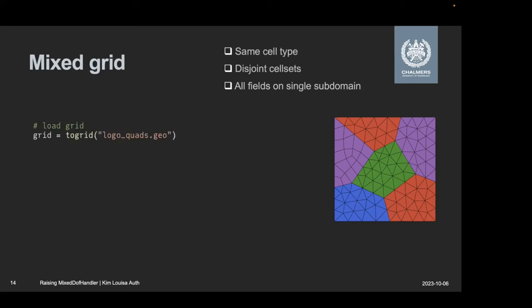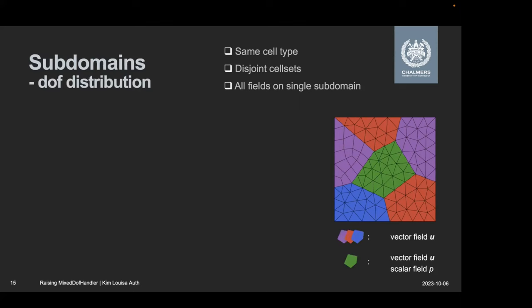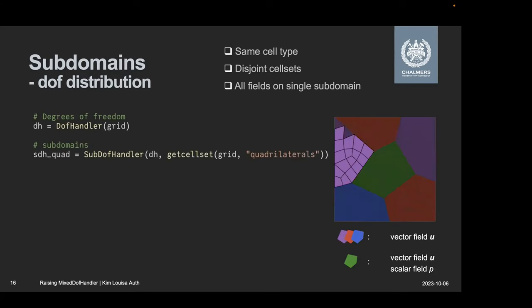And start with loading a grid again. This time I'm loading this grid with the quadrilaterals in it. And since I couldn't figure out how to export that from Gmesh, I'm filtering myself for which ones are triangles and which ones are quadrilaterals. And then I start the Dof distribution. I'm going to showcase this for the problem where I also want the pressure field just in the center, just for the sake of showing how the syntax works. So I start by creating a DofHandler, everything the same as for a usual problem.